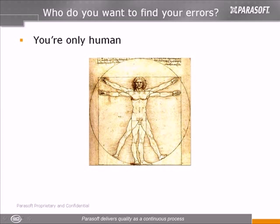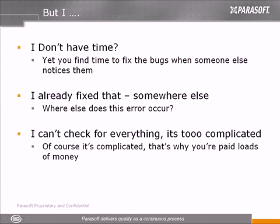So, why is it we use a spell checker for our word documents, but we don't use static analyzers for our code? Well, there's a number of excuses that always get given. You don't have time to scan your code for errors? No, of course you don't if you do it manually. Mobile phones have over 3 million lines of code in them. If you want to print that off, it's over 15km of A4 paper.